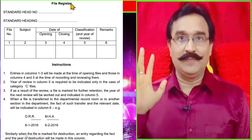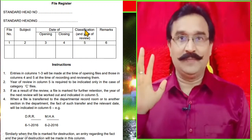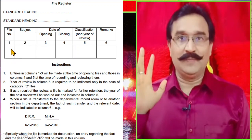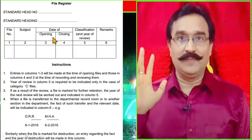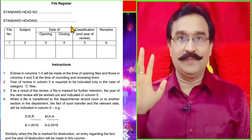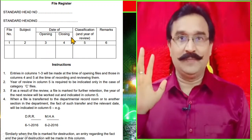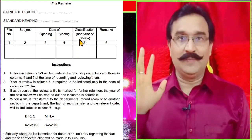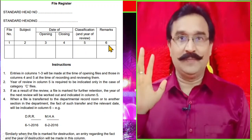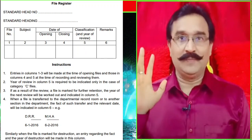So this is how the file register works. In the file register: file number, subject, date of opening are filled first. Date of closing will be mentioned when the file is closed. Classification if any, and year of review will also be mentioned. Any additional information goes in the remarks column. This is called the file register.